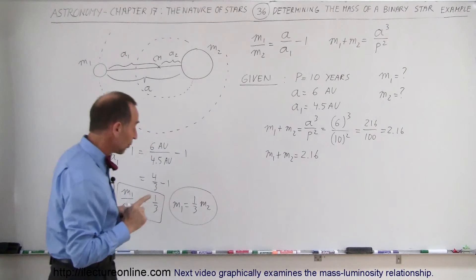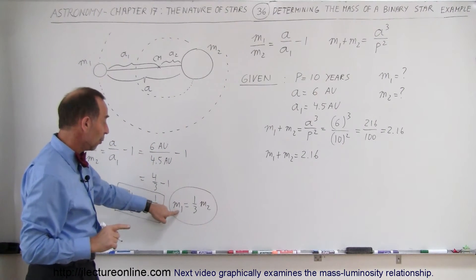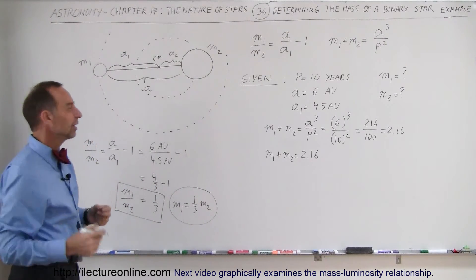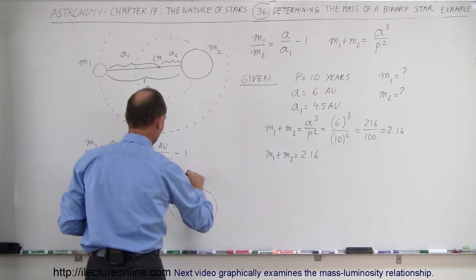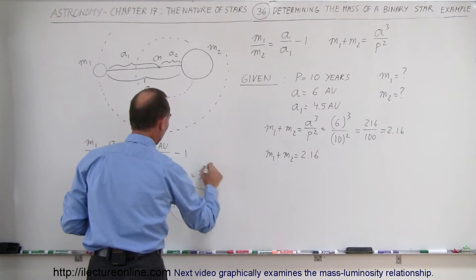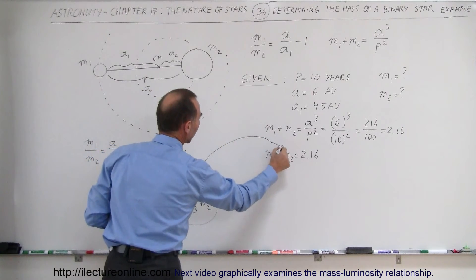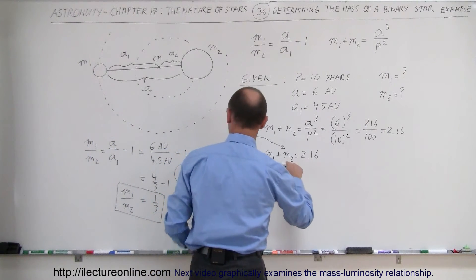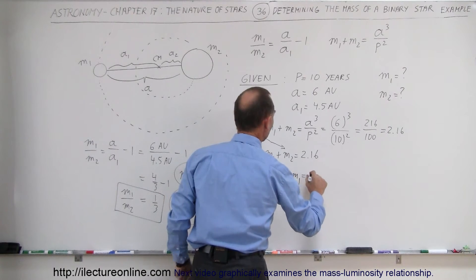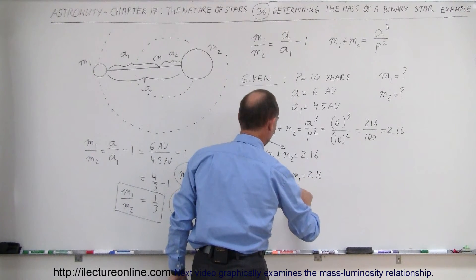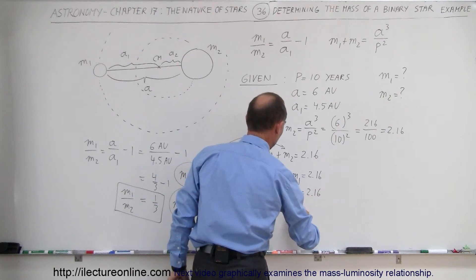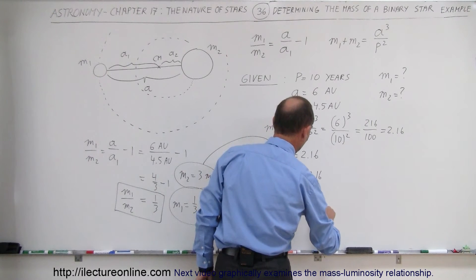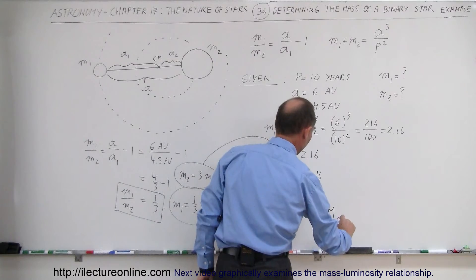Now we solve the two equations simultaneously. We substitute for M1 — since M1 is one-third M2, we can write M2 equals three times M1, which is probably easier to work with. Substituting in, we have M1 plus three times M1 equals 2.16. That means four times M1 equals 2.16, so M1 equals 0.54 solar masses.